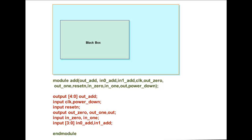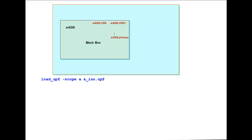Synopsys tool supports black box models for hierarchical blocks in UPF flows, where the block UPF can be loaded with a black box instance as a scope. A black box is an empty module definition with only IO port definitions. This block is instantiated at the top level and we load its UPF file before loading the top level UPF using load_upf -scope.